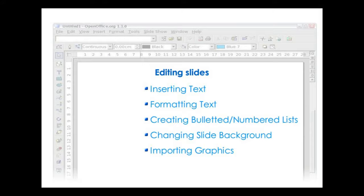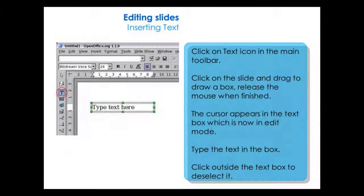For editing slides, we will cover how to insert text, formatting text, creating bulleted or numbered lists, changing slide background, and importing graphics. For inserting text, click on the text icon in the main toolbar. Click on the slide and drag to draw a box, then release the mouse when finished. The cursor appears in the text box, which is now in edit mode. Type the text in the box, then click outside the text box to deselect it.